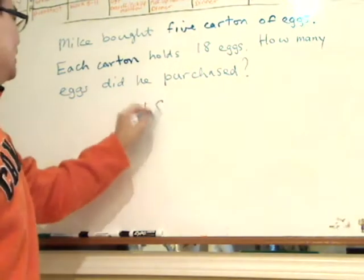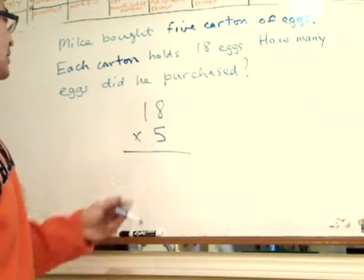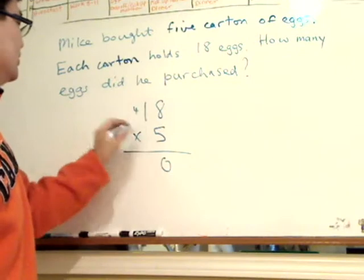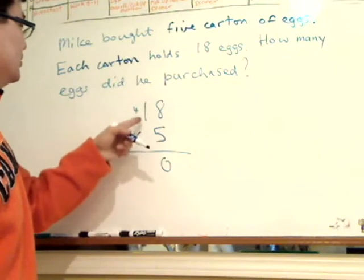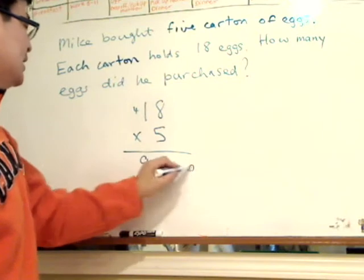Eight times five is 40. Carry the four. Now one times five is five, plus four is nine. So there's 90 eggs.